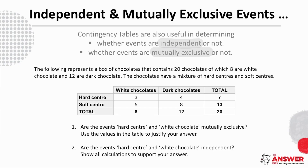Maybe pause the video for a moment here to think about what you would do. The second question asks whether the events hard centre and white chocolate are independent, and we are asked to show our calculations to support our answer. We suggest pausing the video so that you can give the second question a bit of thought as well.